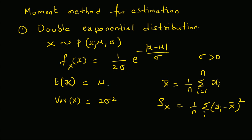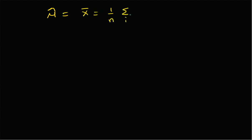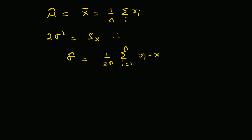We solve for the unknown parameters mu and sigma by equating theory to sample values. Equating mu to the sample mean gives mu_hat = x_bar = (1/n) * summation of x_i. Equating two sigma squared to the sample variance gives sigma_hat = sqrt( (1/(2n)) * summation of (x_i - x_bar)^2 ).